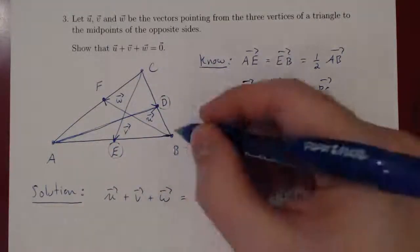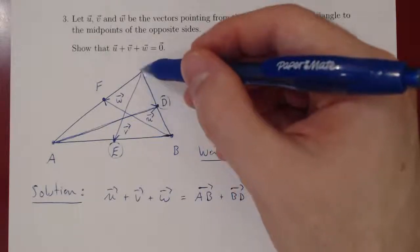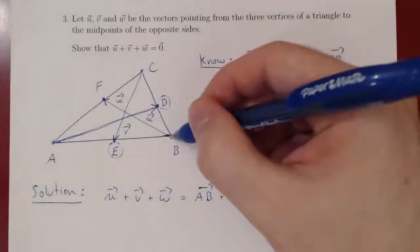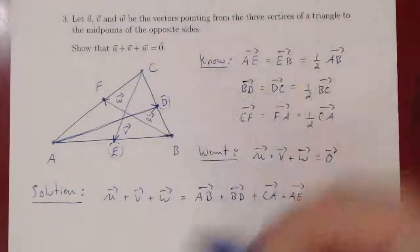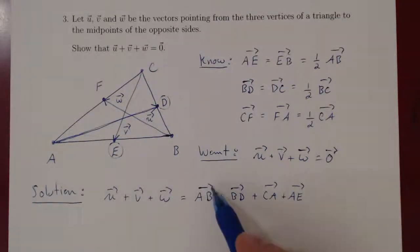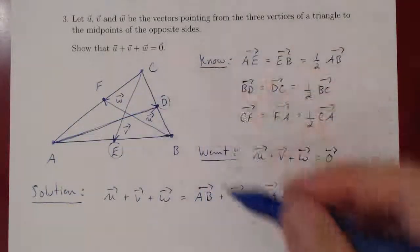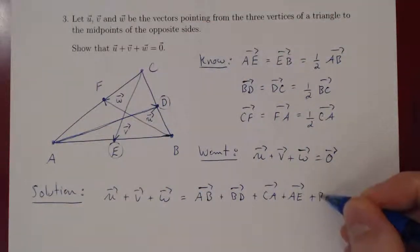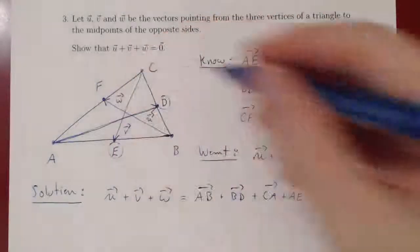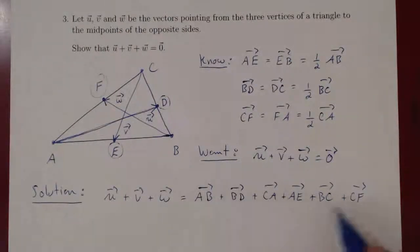When we add W, well, we'll do quite simply BC plus CF. Right? BC plus CF will allow you to walk to the other midpoint. So let's do that. And you see we've walked along AB. We've walked along CA. And now we're going to walk along BC. So vector W is BC plus CF.